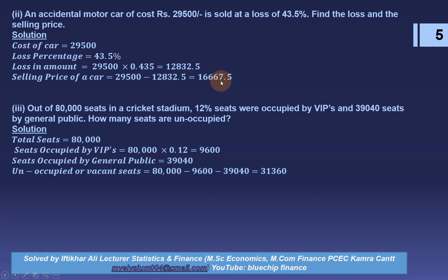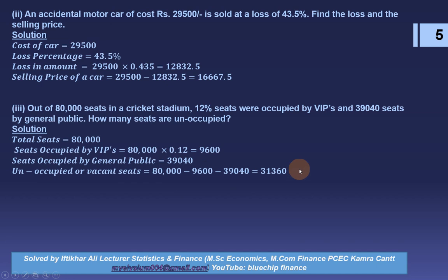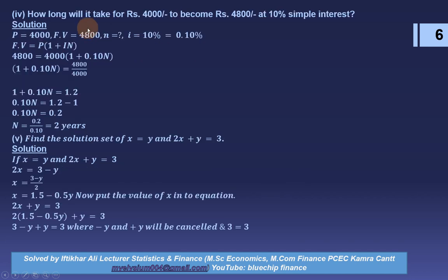Out of 80,000 seats in a cricket stadium, 12% were occupied by VIPs and 39,040 seats by the general public. How many seats are unoccupied? Seats occupied by VIPs = 80,000 × 0.12 = 9,600. Unoccupied seats = 80,000 − 9,600 − 39,040 = 31,360.